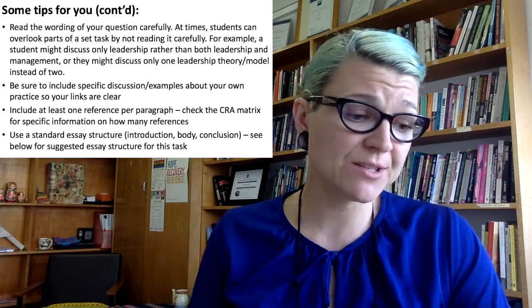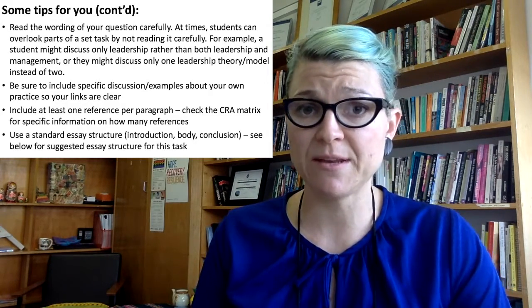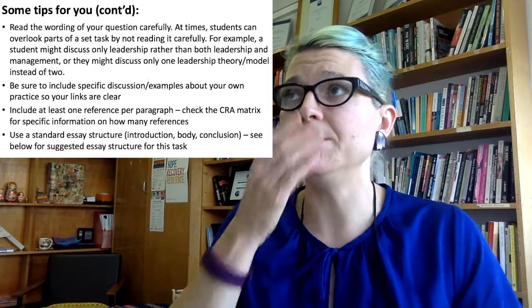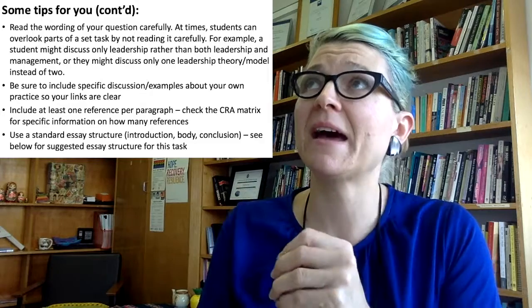Be sure to include specific discussion and examples about your own practice so that your links are clear. When you write, you really need to be able to say something like, 'I had this particular thing happen to me when I was doing this work, which demonstrates how I'm a transformational leader.' Then describe exactly what happened — give me at least a few sentences so I can see what transformational leadership looks like in your example. Then at the end, link back to the literature and say, 'This clearly demonstrates this element of transformational leadership as discussed by Herman,' or whoever.